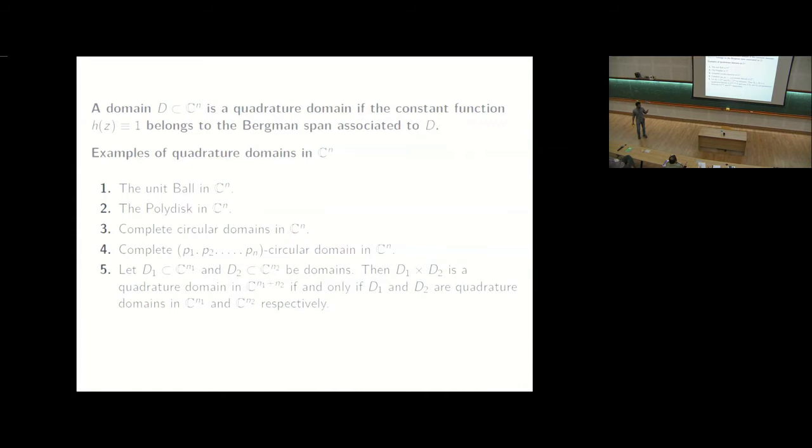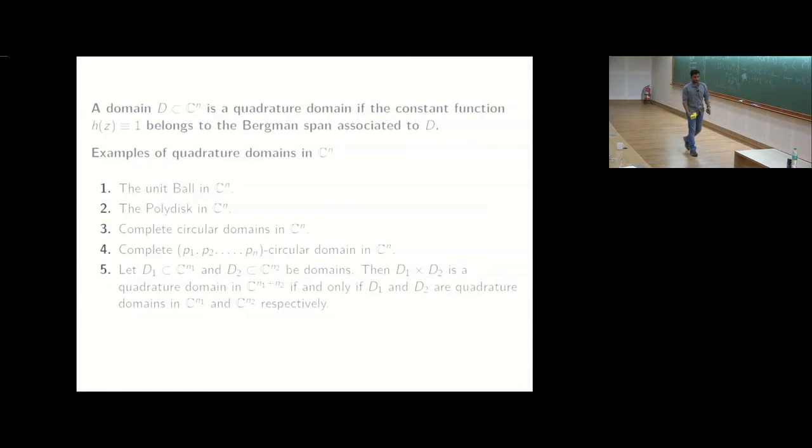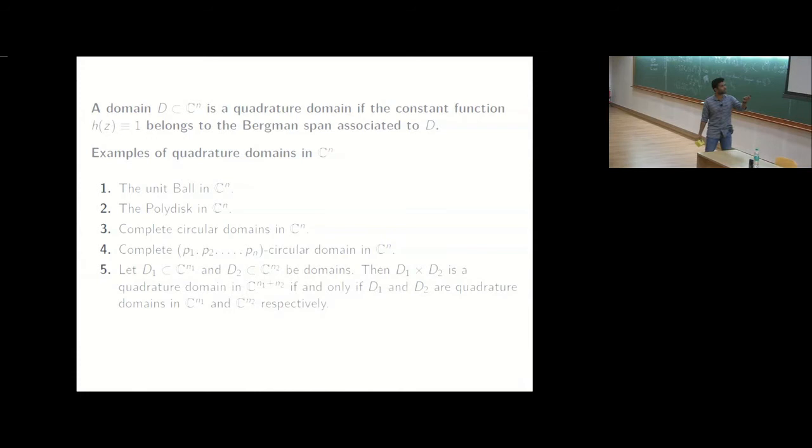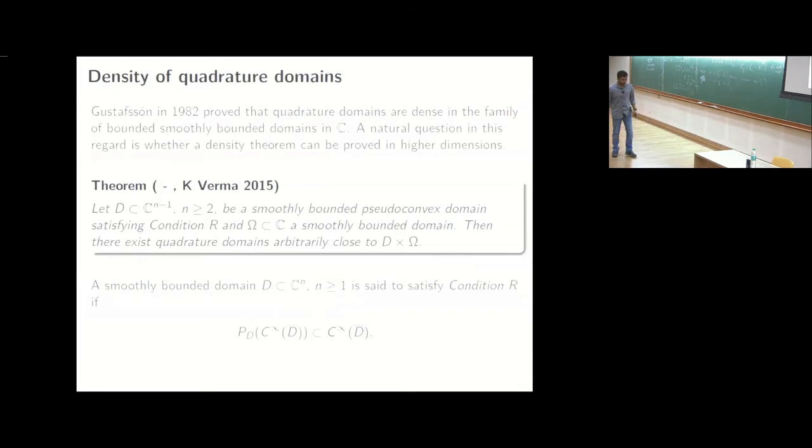It says that if d1 and d2 are quadrature domains in cn1 and cn2 respectively, then d1 cross d2 is a quadrature domain if and only if d1 and d2 are respectively quadrature domains. So in particular you take any quadrature identity. So the proof will reveal that the nodes will depend on the nodes of d1 and d2, the nodes of d1 cross d2 and you can get sufficiently complicated quadrature domains you want. Okay, so this particular statement was exploited very recently by Alan Legg, a student of Stephen Bell, to talk about some function theoretic properties.